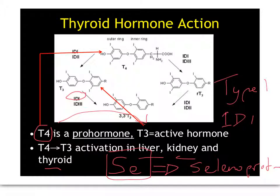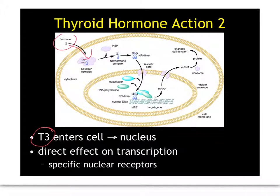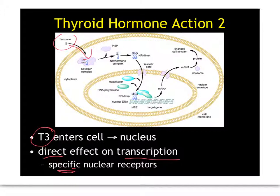There are other examples of selenoproteins beyond the deiodinases, and that would be a lovely extension task if this is an area of interest to you. Active hormone T3 needs to enter the nucleus in order to work. Thyroid hormone has a direct effect on nuclear transcription, and it does this through specific nuclear receptors. If you want to know more about this, again it would form a very neat little extension task.